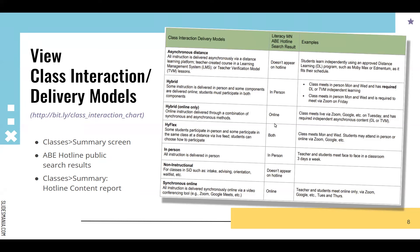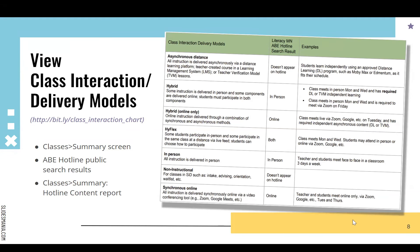For example, synchronous online at the bottom — all instruction is delivered synchronously online via a video conferencing system such as Zoom or Google Meet. That type of class will appear on the hotline when a person searching for classes toggles the online button. An example is teachers and students meeting online only via Zoom. This handout is available — Mary just put a link to it in the chat, and there's also a link to the actual presentation.